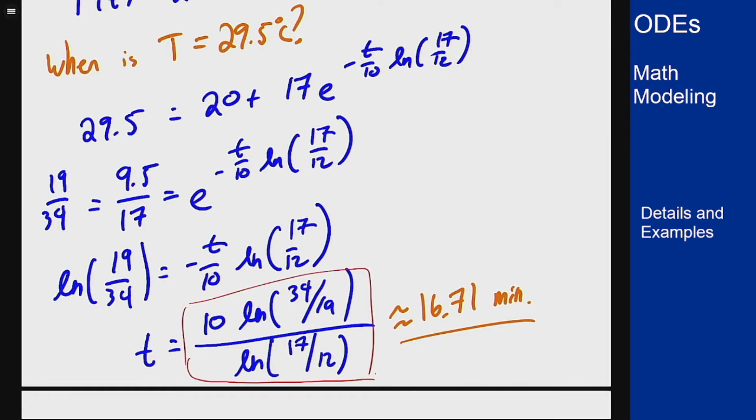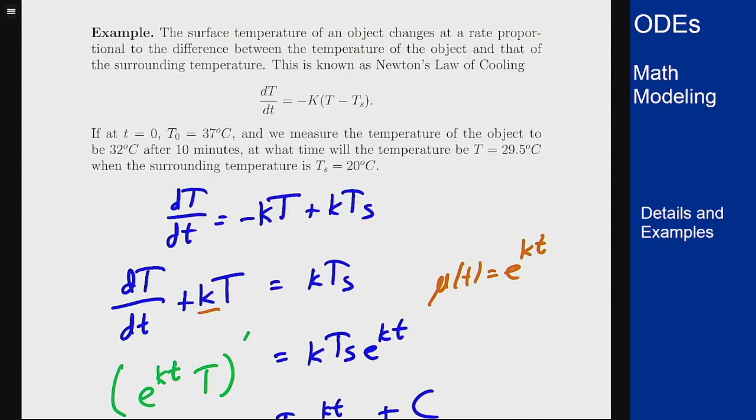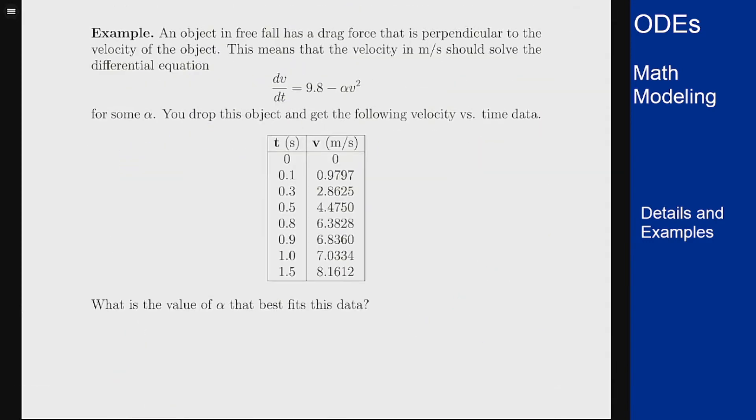That's the idea of these problems. The simple version is that you're given two pieces of data, one for initial condition and one for this parameter, and you can solve for what k has to be. There's a more involved version that's more complicated and involves actual coding with best fitting parameters.